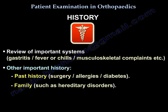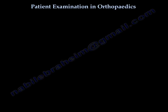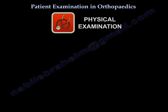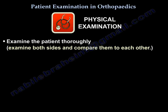Social history includes tobacco, alcohol, or drug use. For physical examination, examine the patient thoroughly — make sure you examine both sides and compare them to each other.